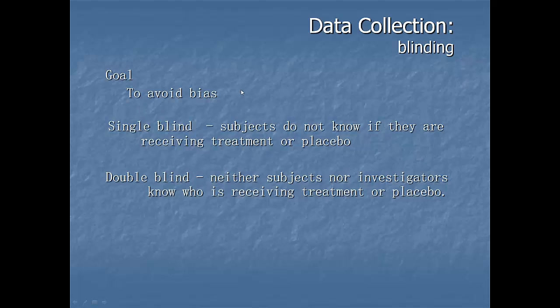Blinding. Blinding means subjects do not know if they are receiving treatment or placebo. Double blind means neither subjects nor investigators know who's receiving the treatment or placebo. The reason is to avoid bias. So that means extraneous factors.